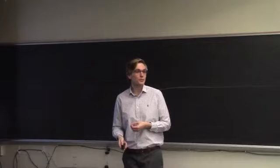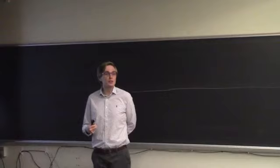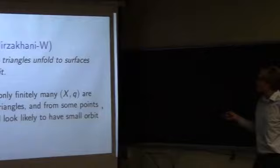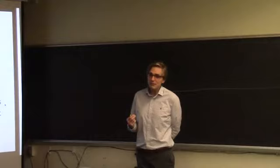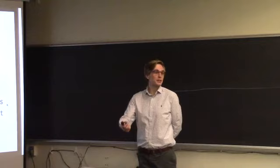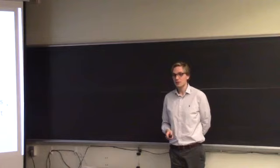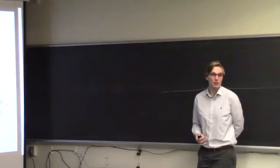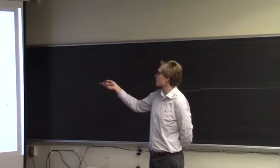The first result, joint with Mirzakhani, is that we can finally compute some orbit closures of unfoldings — focusing on triangles. We showed there are infinitely many triangles that unfold to surfaces with dense orbit. In each genus there are only finitely many surfaces that arise in this way, and from every perspective they look like they want to have closed orbit: they're very special, very symmetric surfaces. Despite that, very often they have dense orbit — an indication that there aren't that many orbit closures. Our methods are effective: all these triangles have dense orbit, and the list goes on forever.